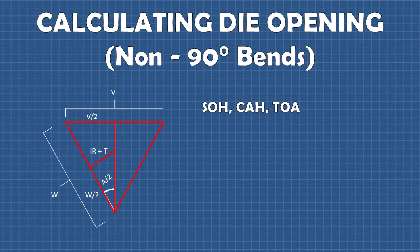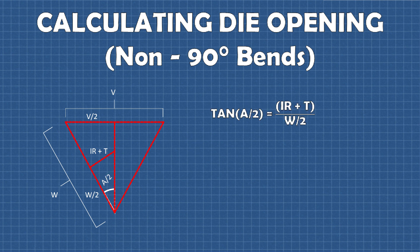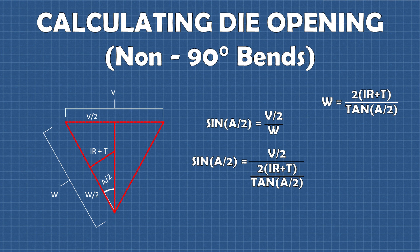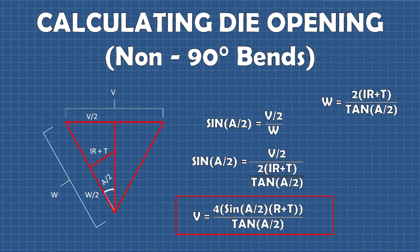Going back to the mnemonic SOHCAHTOA, we can solve for W by setting the tangent of our triangle equal to the opposite over the adjacent leg. We set the tangent of half the bend angle equal to the inside radius plus material thickness over one half of W, which simplifies to an equation for W. Then we solve for V by setting the sine of one half the bend angle equal to half of V over W, and using some algebra we arrive at the final equation we can use to solve for the optimal die opening given any combination of thickness, radius, and bend angle.